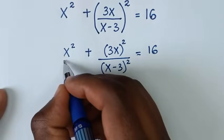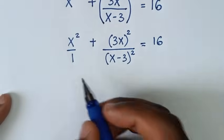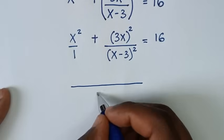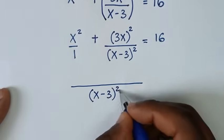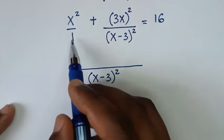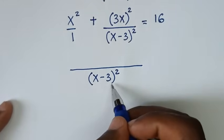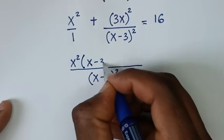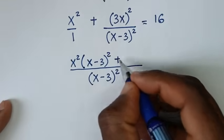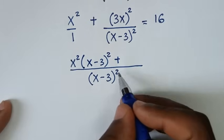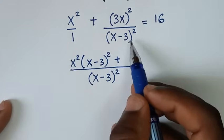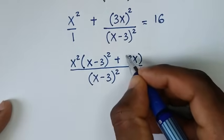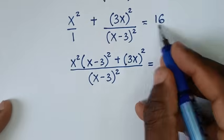In the next step, this x square is the same as x square over 1, so the LCM of 1 and x minus 3 bracket square gives a denominator of x minus 3 bracket square. Then x minus 3 bracket square divided by 1 is x minus 3 bracket square, times x square, giving x square bracket x minus 3 bracket square. Plus, x minus 3 bracket square divided by x minus 3 bracket square is 1, times 3x bracket square, giving plus 3x bracket square, all equal to 16.